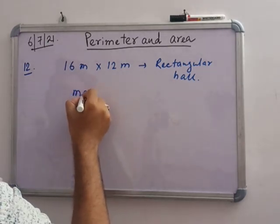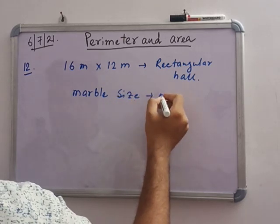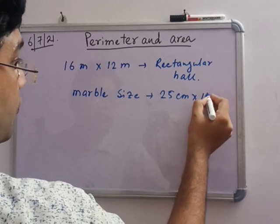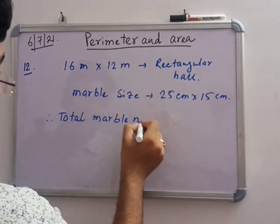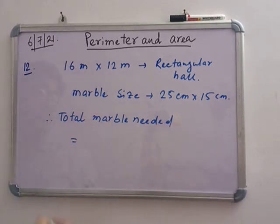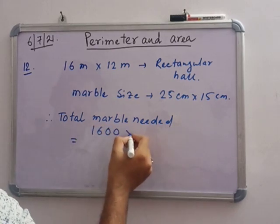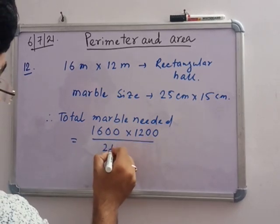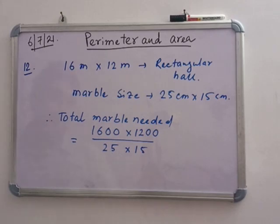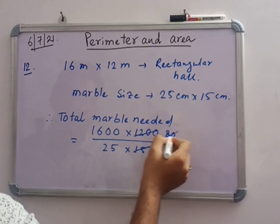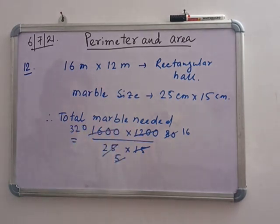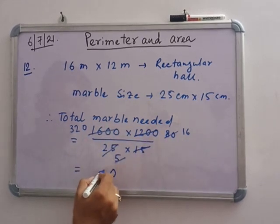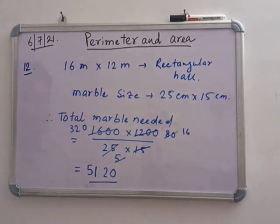The marble size is 25 centimeter into 15 centimeter. So total marble needed equals 1600 into 1200 by 25 into 15. Now divide it, 80, 5, 1, so 5120. The number of marbles needed to fill the hall. Note it down.